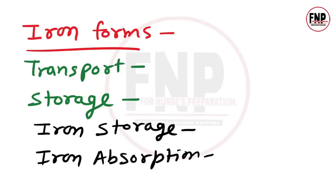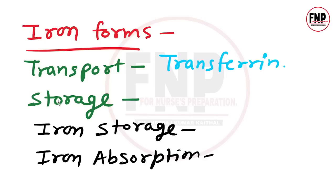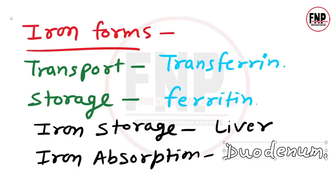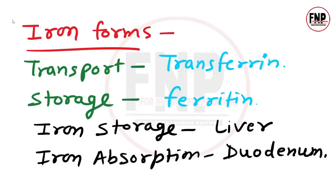Iron ke baare mein: iron body mein transferrin ki form mein transport hota hai. Iron ki storage form ferritin hai. Iron liver mein stored rehta hai. Iron ka absorption duodenum ke andar hota hai.